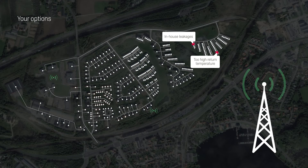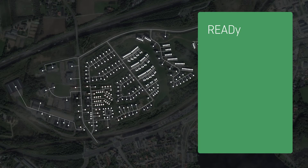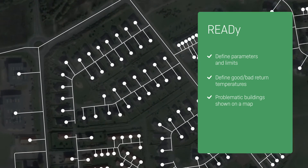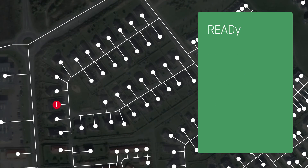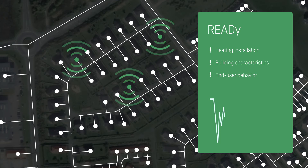By monitoring and comparing the building's return temperature, you can see exactly where to prioritize your resources. Reedy enables you to define parameters and limits in your reports — useful for defining good and bad return temperature. Use this knowledge to have problematic buildings shown on a map, zoom into the building to see key numbers and root causes, which could be the heating installation, building characteristics, or end user behavior. You also have the option to visualize different data from one or multiple meters based on the parameters you have defined.